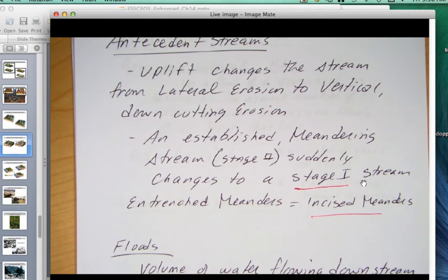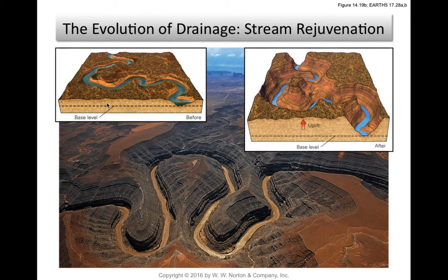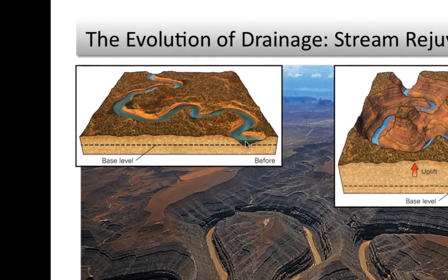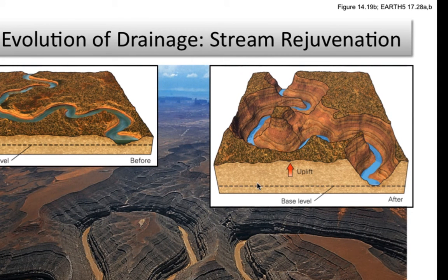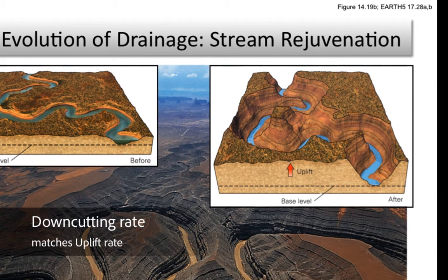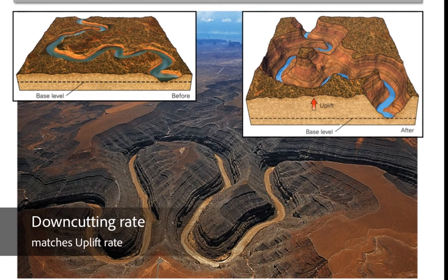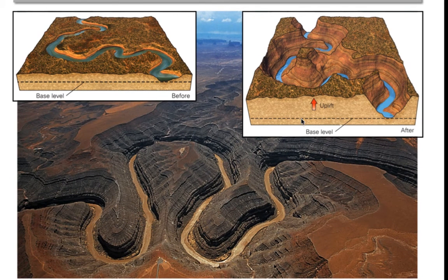Here we see a relatively flat region where base level is near the river bed, so there's a stronger component of lateral erosion. Tectonic uplift deepens that base level and the river starts cutting. The rate of downcutting matches the rate of uplift, and we get these entrenched or incised meanders. These are the Goosenecks of the San Juan River, which flows into the Colorado. This was once a low elevation region, but the Colorado Plateau has been tectonically uplifted over the last about 40 million years, and the rate of vertical downcutting has kept up with the uplift rate.